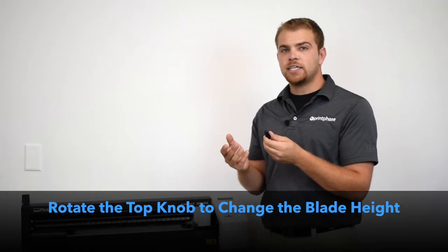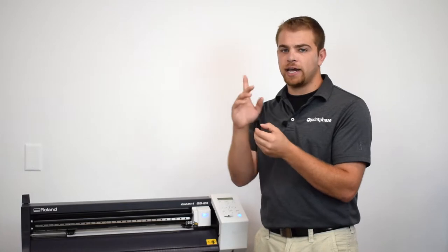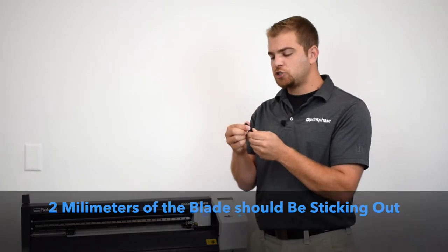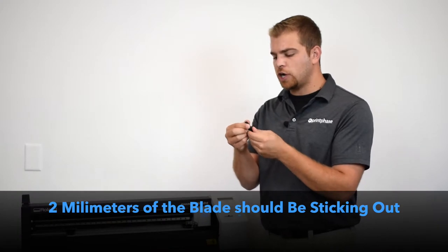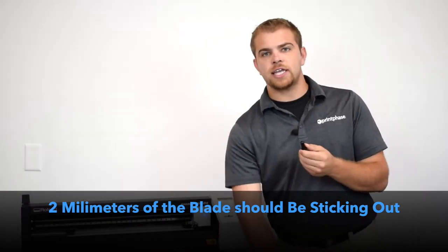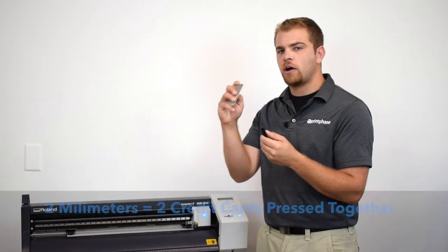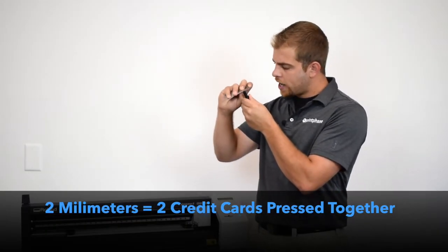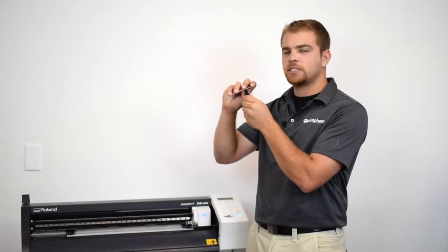Essentially you don't want it all the way locked down exposing the blade many millimeters more than we need. What we actually want is two millimeters of the blade showing from the holder. And how you can get that distance is taking two credit cards and pressing them together and putting it right next to the blade and finding that two millimeter distance that you want.